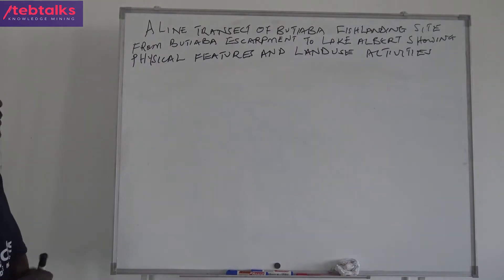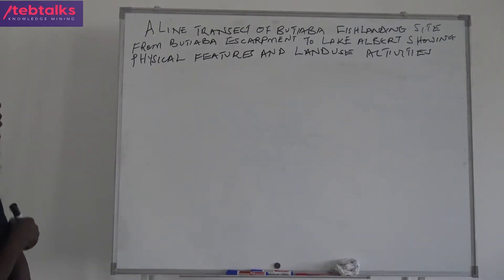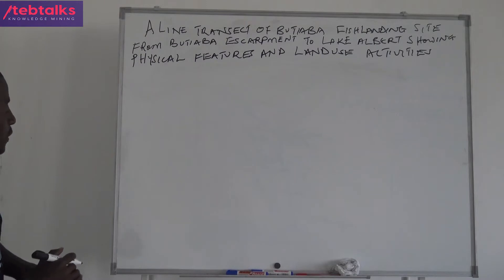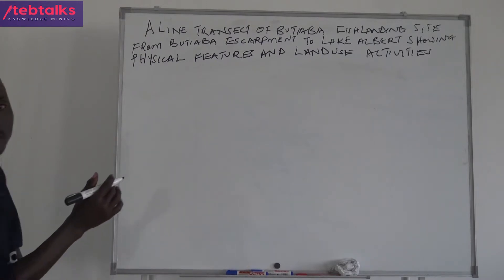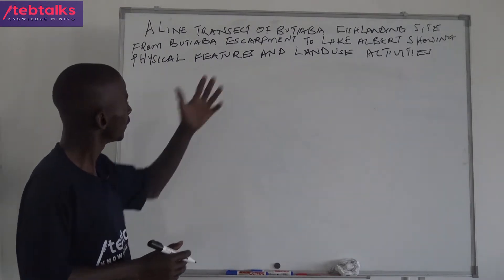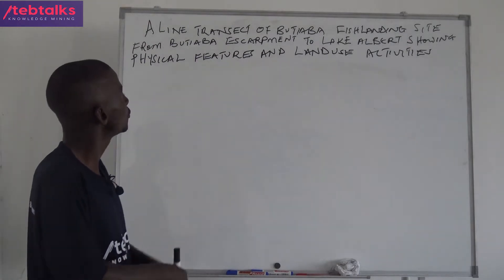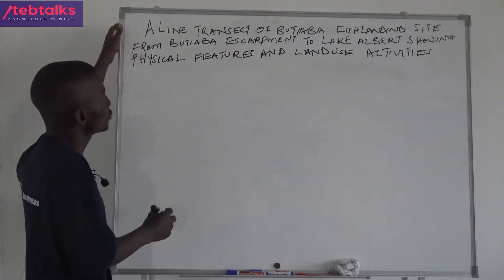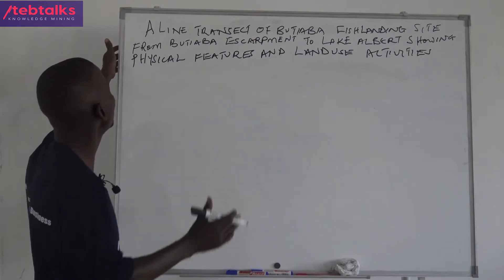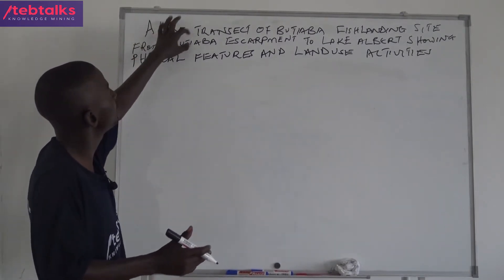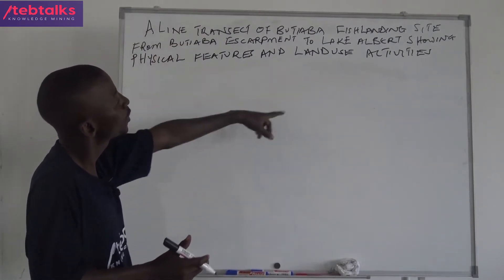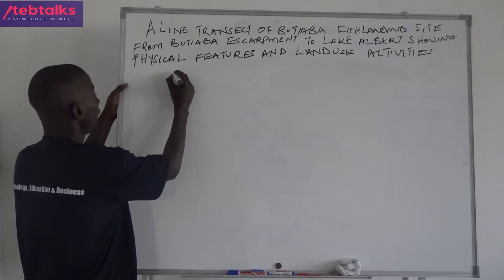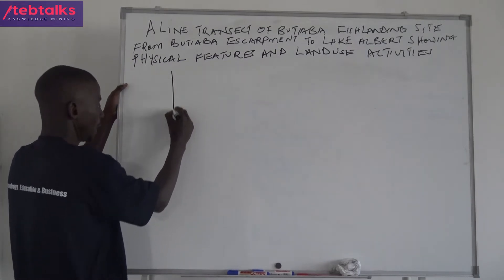A line transect of Tiaba Fish Landing Site, from Butiaba Escarpment to Lake Albert, showing physical features and land use activities. Those two things — you should show where you are beginning from and where you are ending. We are beginning from Butiaba Escarpment and ending at the lake.